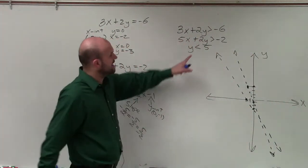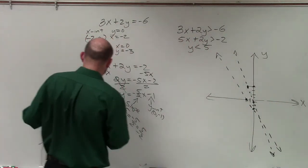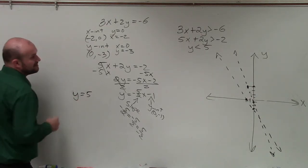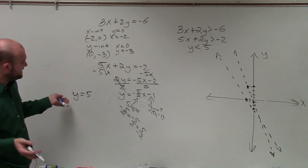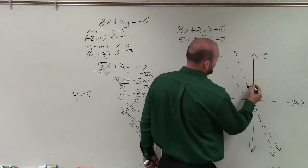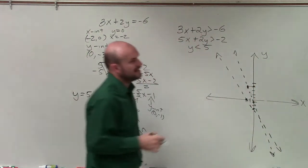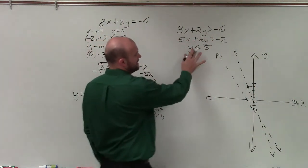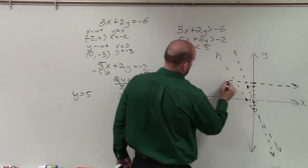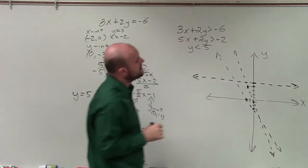All right, and then the last inequality here is I have y is less than 5. And when graphing this here, I just have y equals 5. So that means the y value is always going to be equal to 5. So therefore, I'll just go up to 1, 2, 3, 4, 5. And whenever y equals 5, that's just going to be a horizontal line. Again, that's dashed. OK, so there are my three boundary lines.